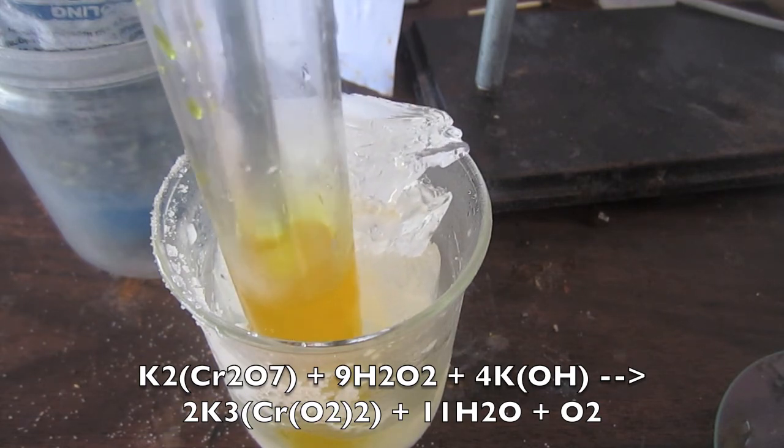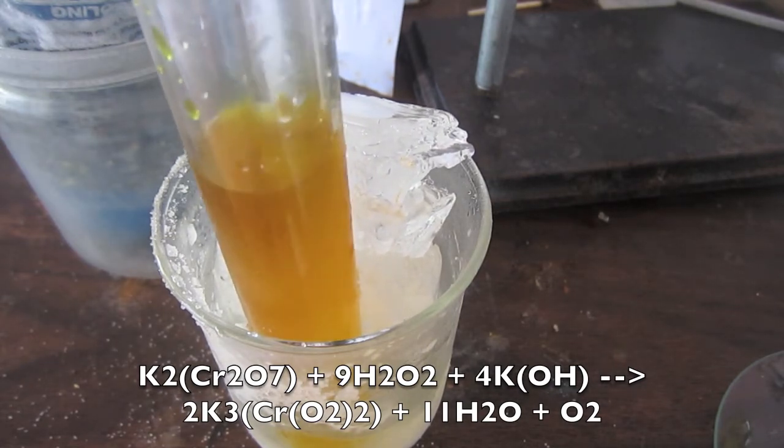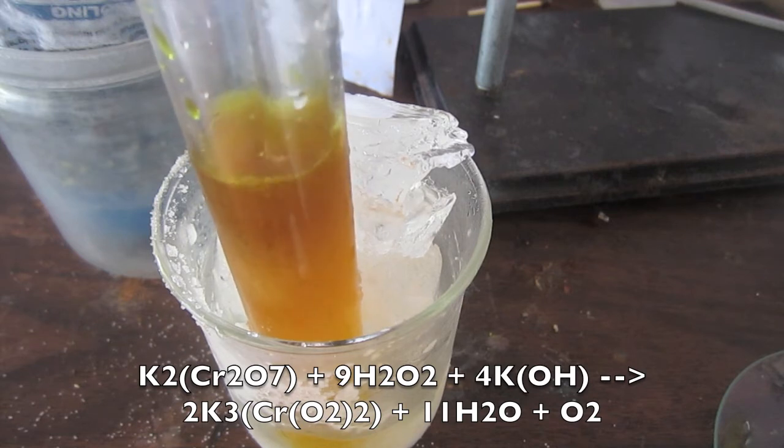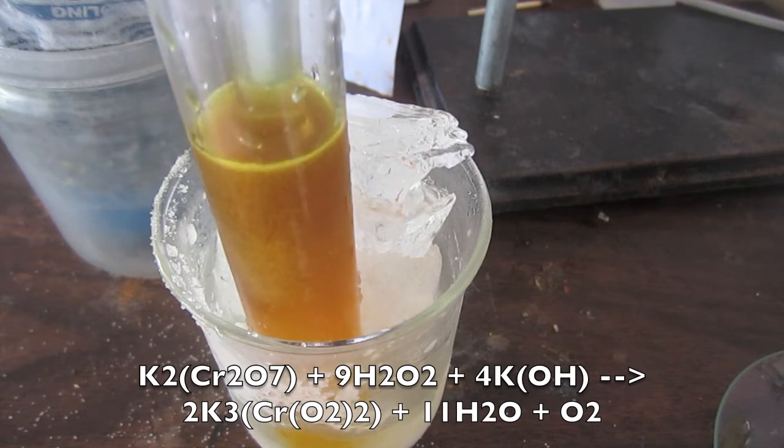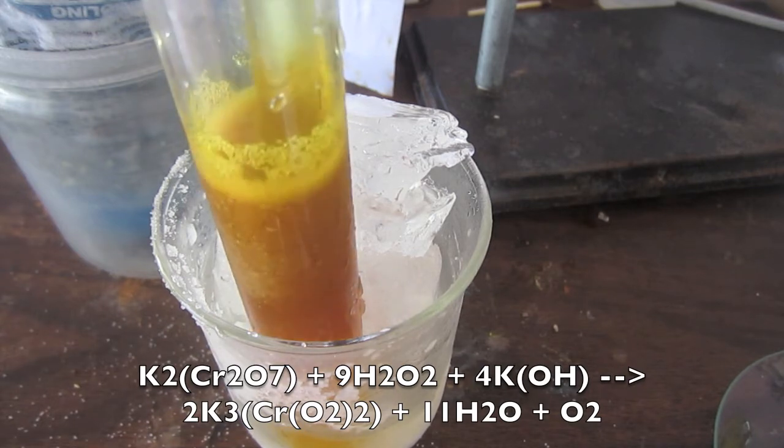Now, you may wonder why you need the potassium hydroxide. This is because you need to remove the hydrogen from the hydrogen peroxide, so you're left with pure peroxide ligands to complex with the chromate.